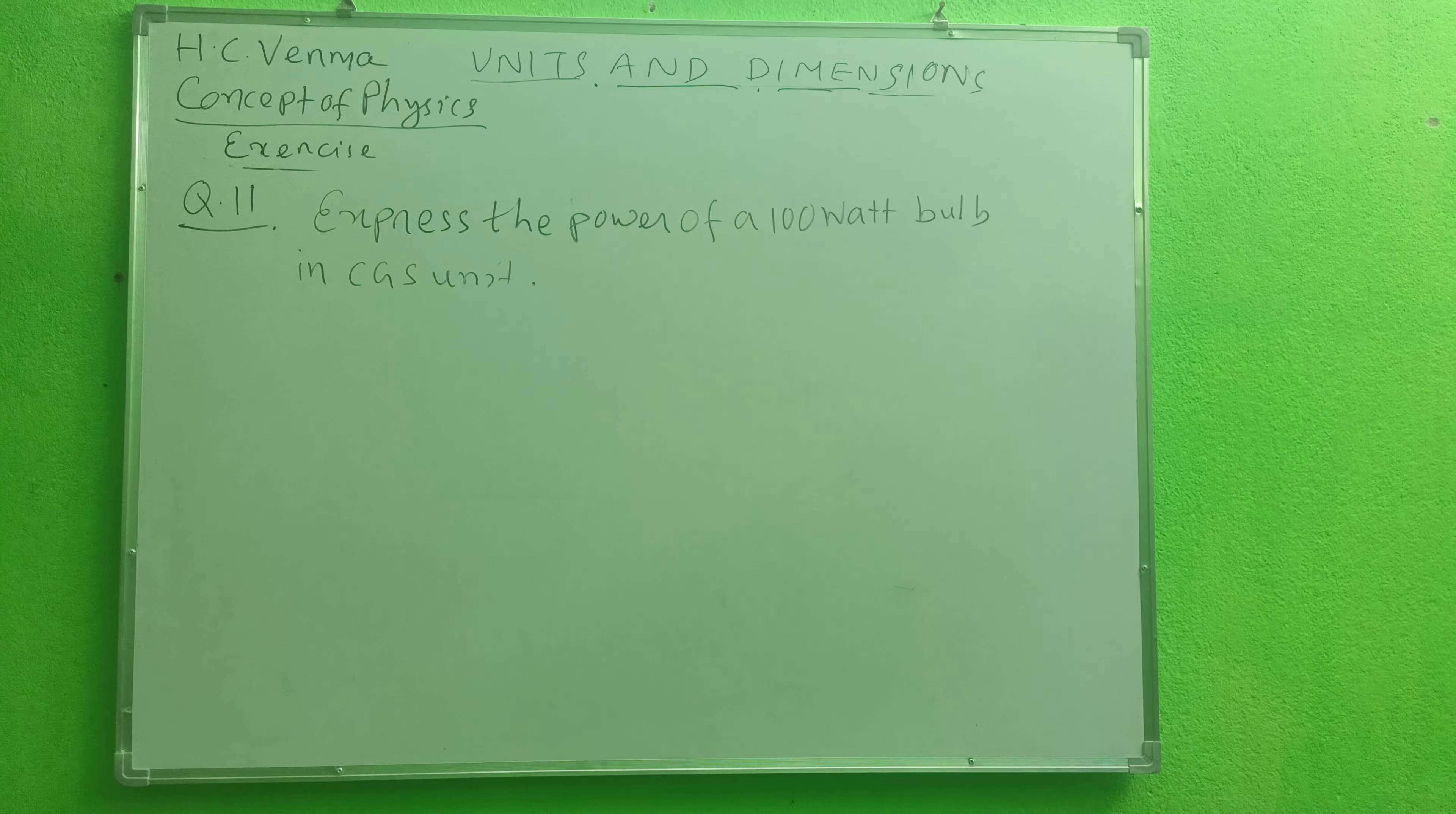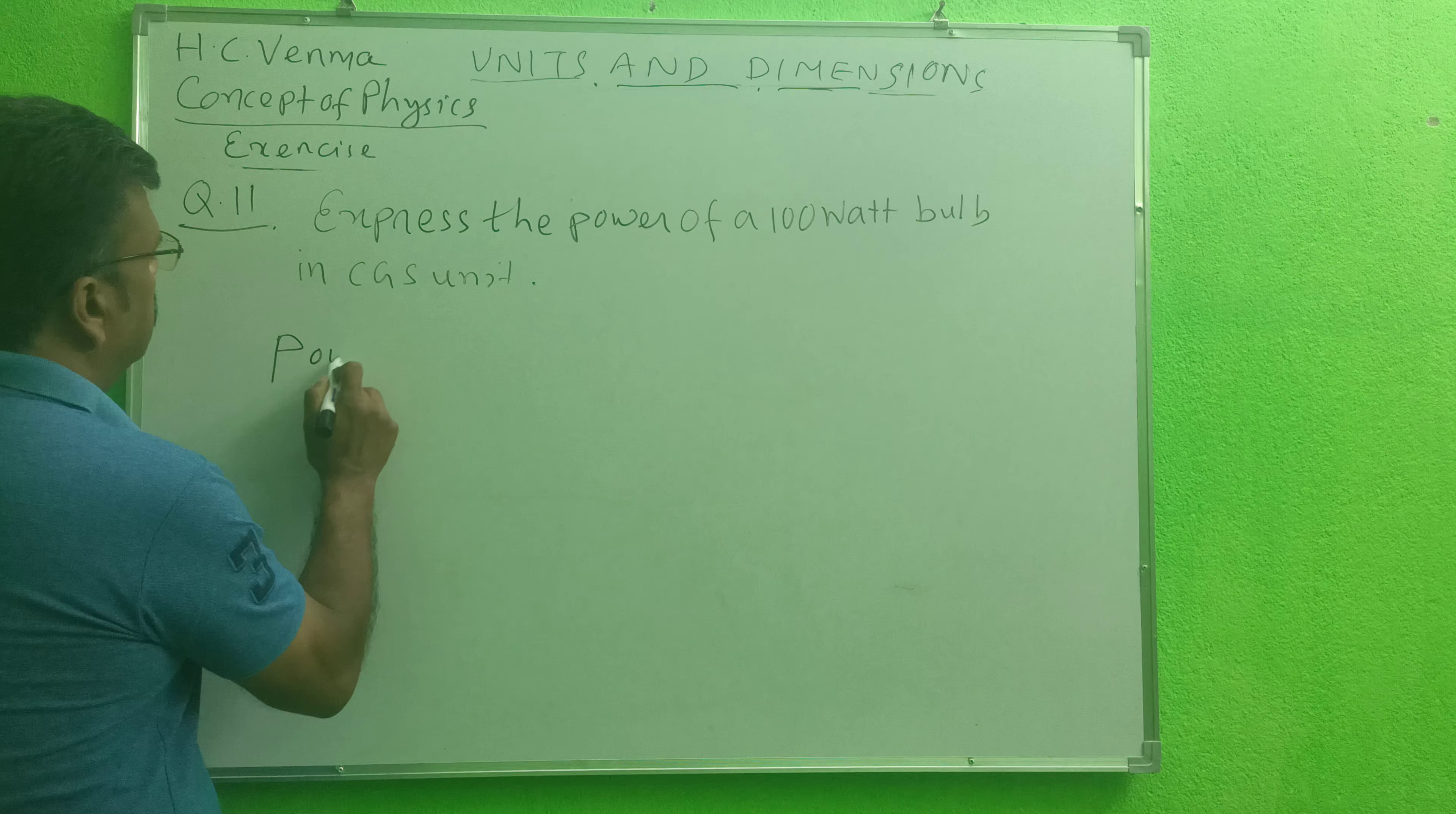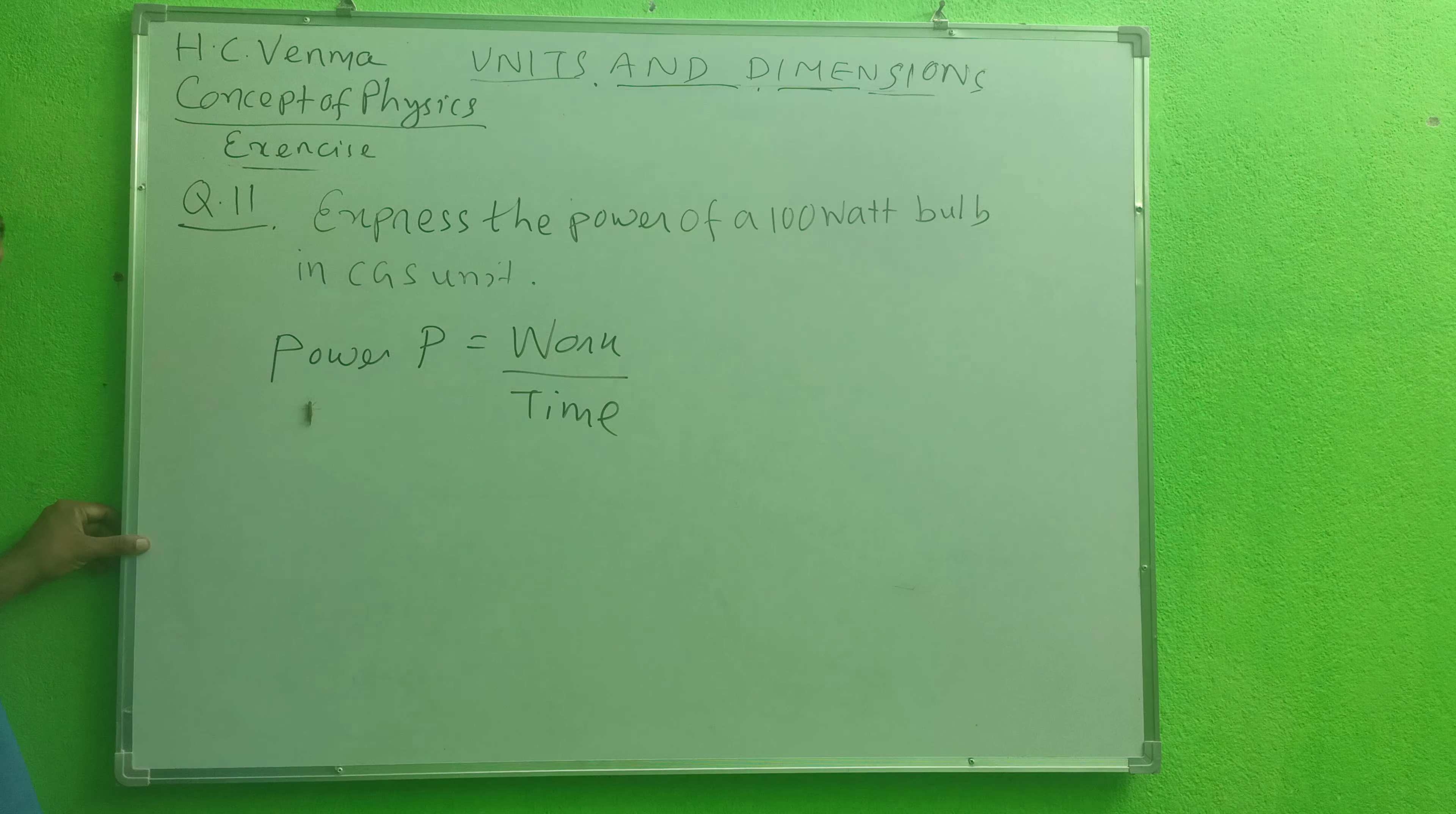Next question is a student's question of a learner: Express the power of a 100 watt bulb in CGS unit. Power P is equal to work divided by time.